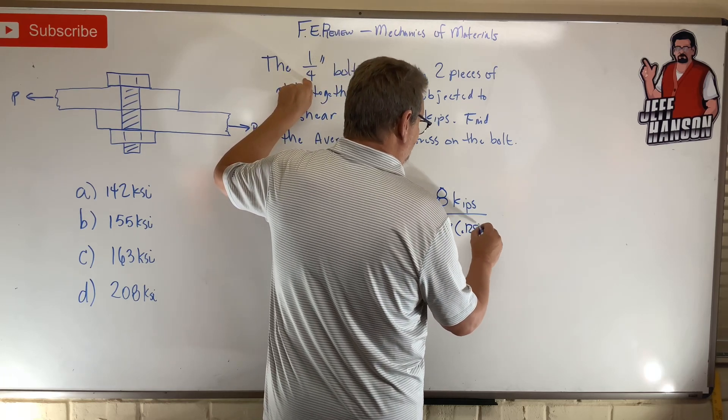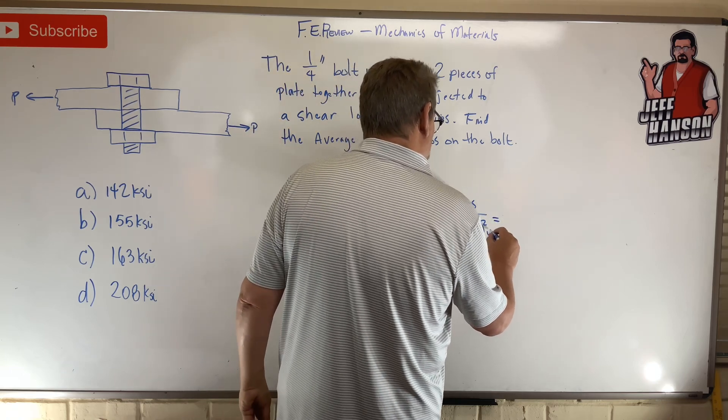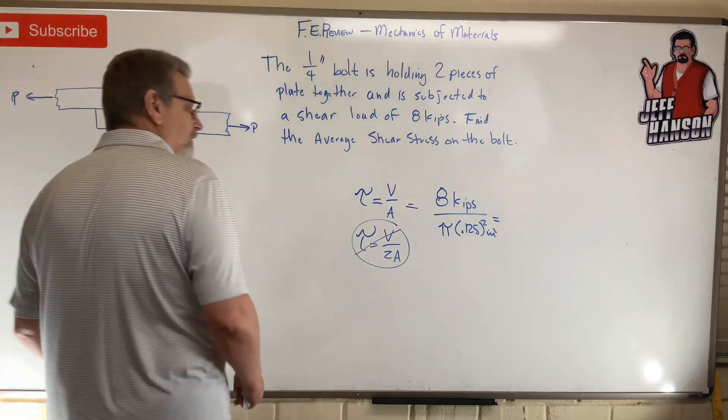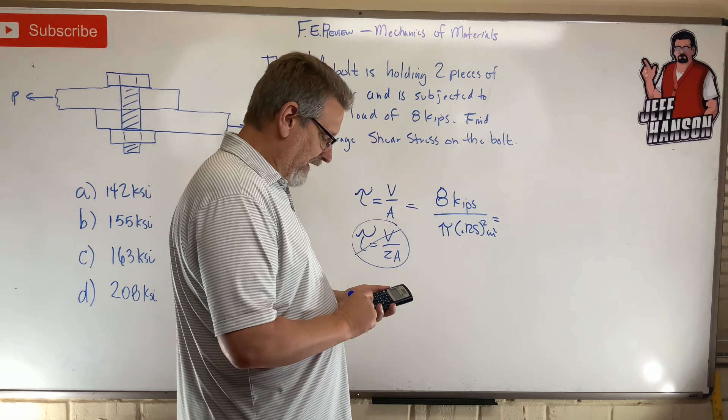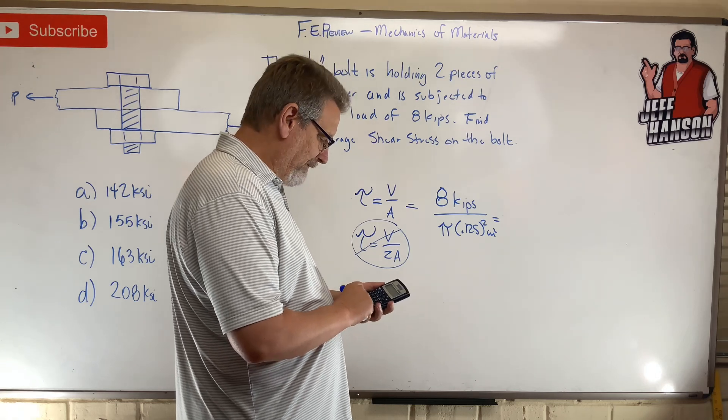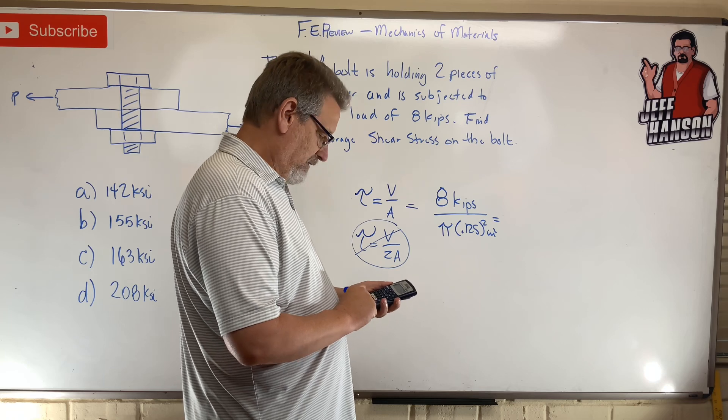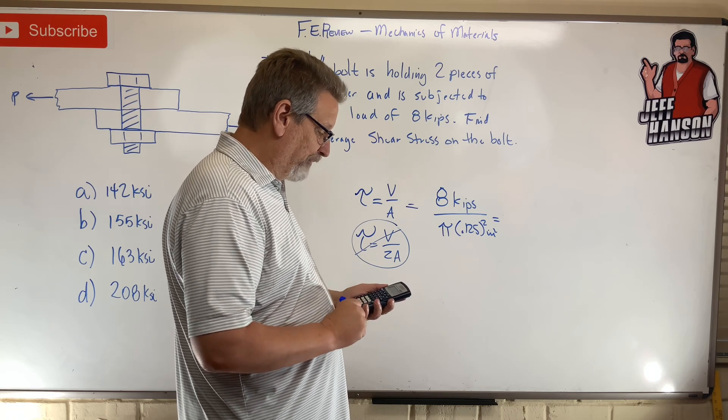Okay, calculator on. Clear. Eight divided by pi equals, divided by 0.125 squared equals.